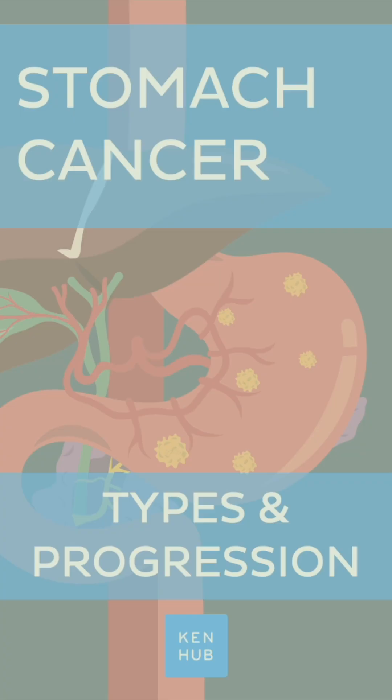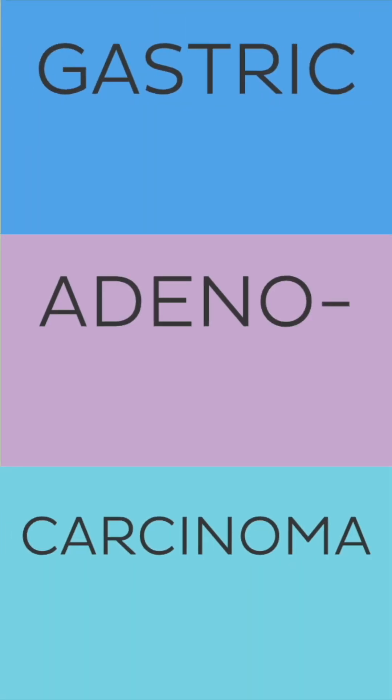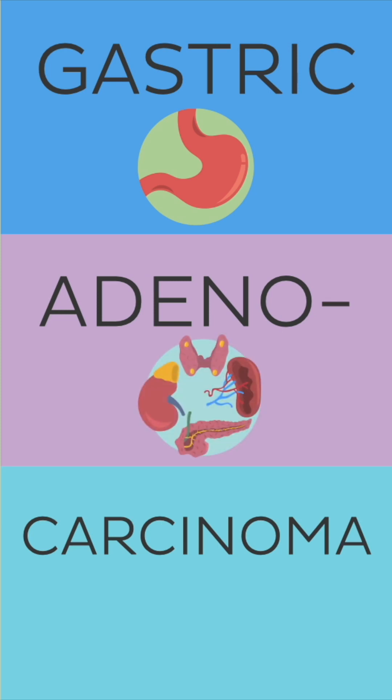In medical terms, stomach cancer is called gastric adenocarcinoma. Gastric comes from the Latin word gaster, which means stomach. Adenocarcinoma is a compound word derived from adeno, which refers to glands, and carcinoma, referring to cancer.